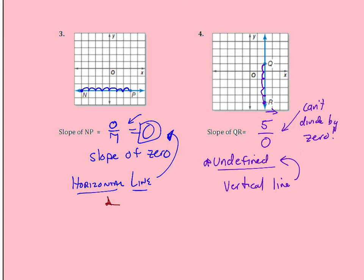Horizontal line, vertical line. Please keep them straight. Horizontal, 0, vertical, undefined. A lot of students like to switch those. And that confuses me, which is not a good idea either.